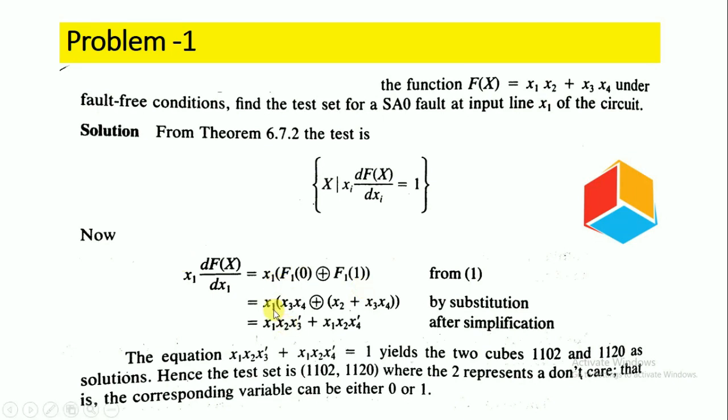For f1(0), this represents the stuck-at-0 fault. When x1 = 0, f(x) = x1·x2 + x3·x4. Since x1 = 0, the first product becomes 0, so we get f(x) = x3·x4. So we have x3·x4 for the exclusive-or operation.